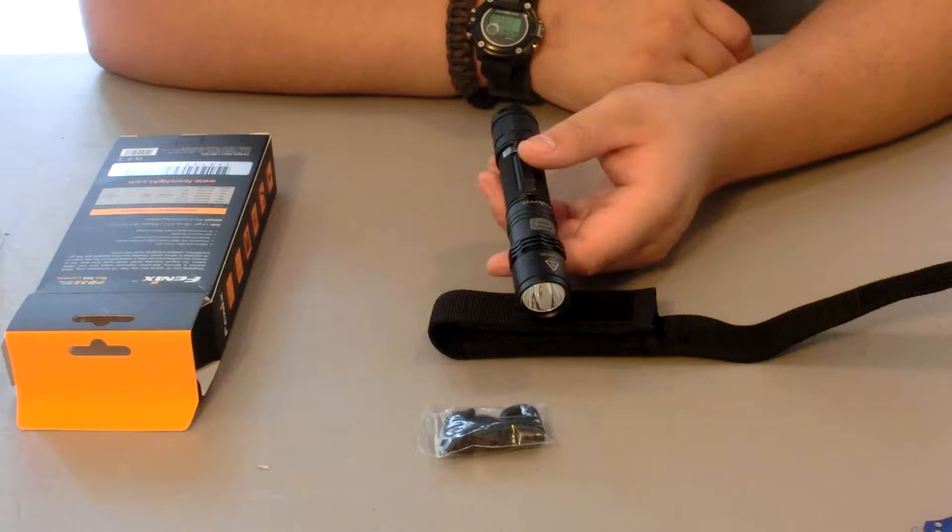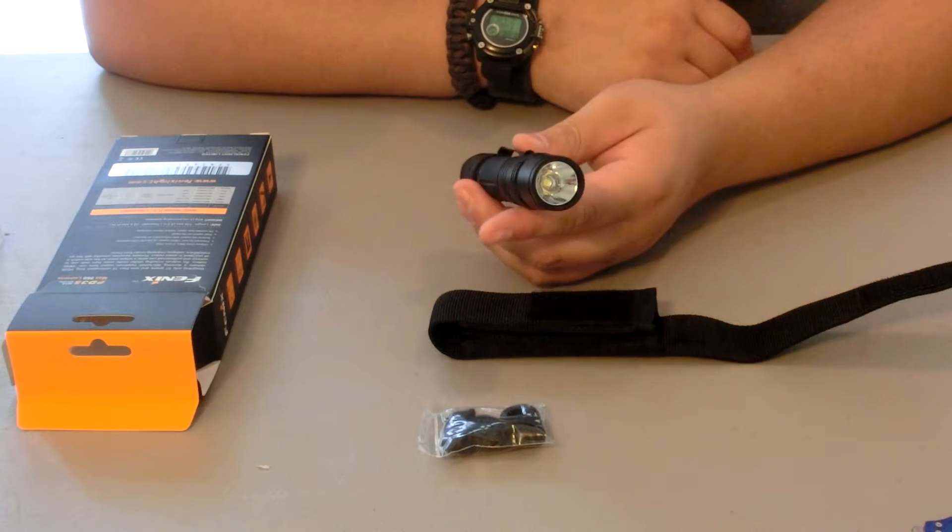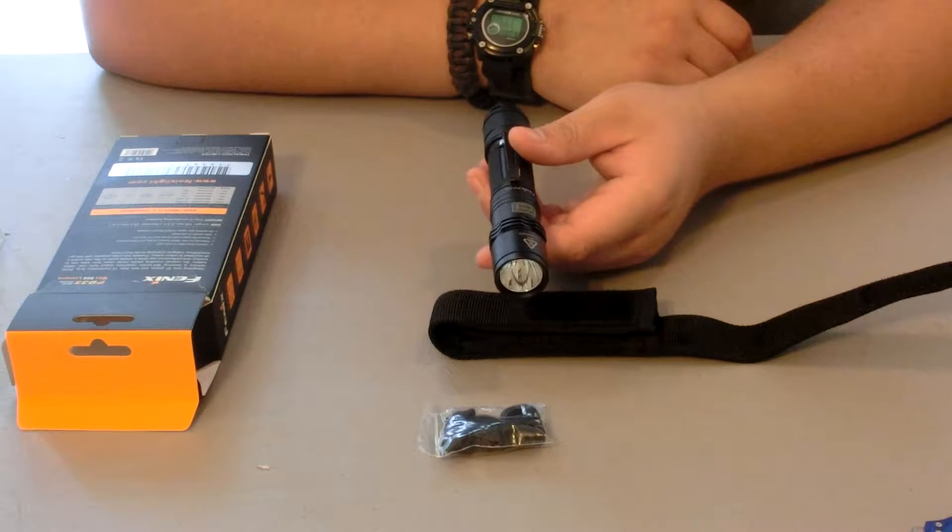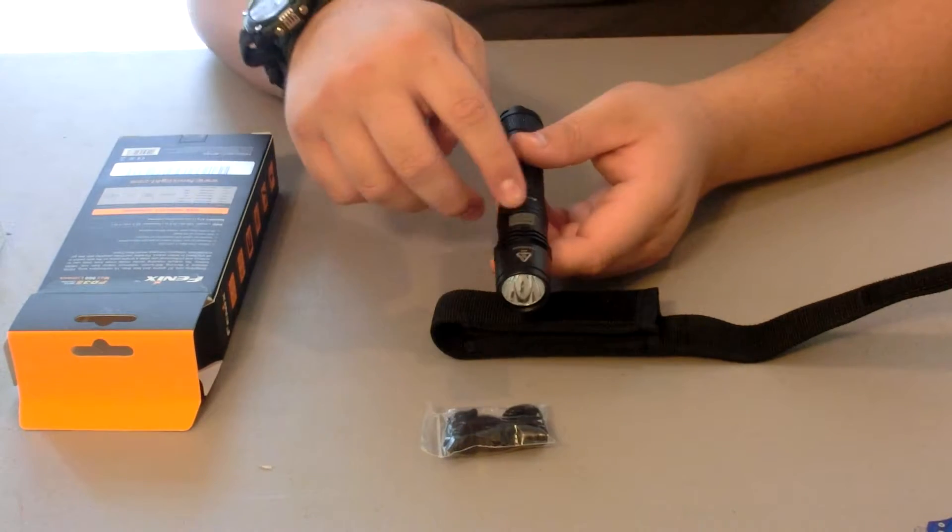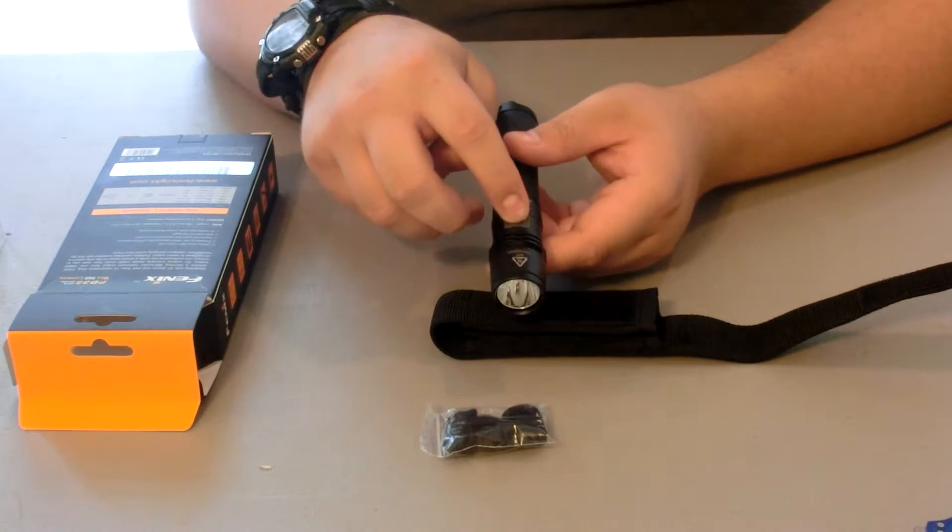Low is 50 lumens and that runs for 38 hours, so I will just honestly keep it on low so I could search through my backpack, but then of course I'll change the modes with that button right there.